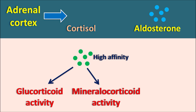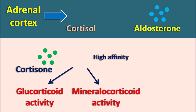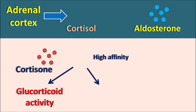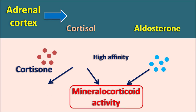But in a few cells, cortisol can be converted into cortisone. Cortisone is a somewhat inactive form of cortisol which shows only glucocorticoid activity with very little mineralocorticoid activity. So in these cells, aldosterone can enter and bind to the mineralocorticoid receptors, thereby mainly showing mineralocorticoid activity. In this way, in many cells cortisol shows high affinity toward corticosteroid receptors, but in a few cells aldosterone plays the major role because cortisol is converted to cortisone, and in such cells we mainly observe mineralocorticoid activity.